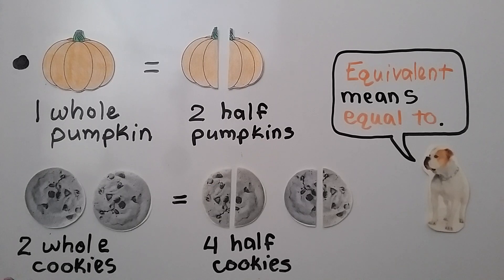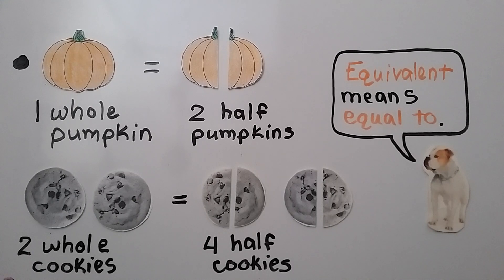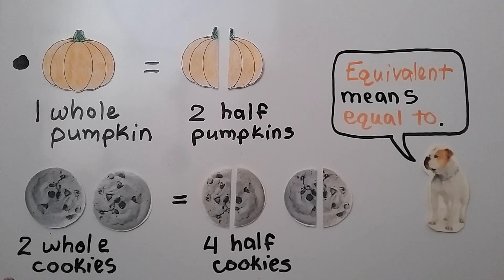One whole pumpkin is equivalent to two half pumpkins, and two whole cookies are equivalent to four half cookies. Equivalent means equal to.